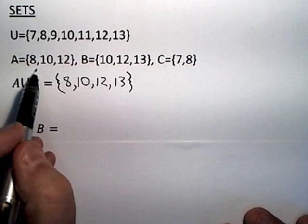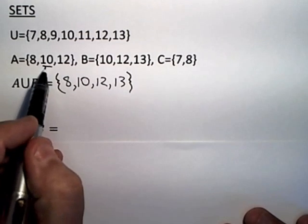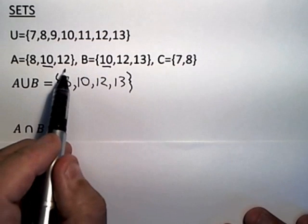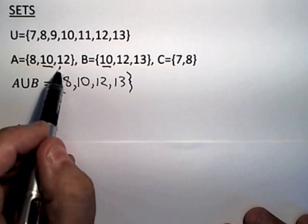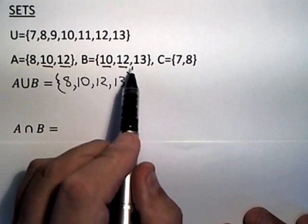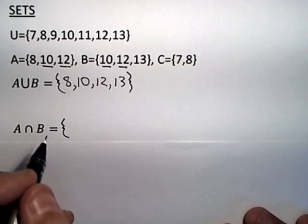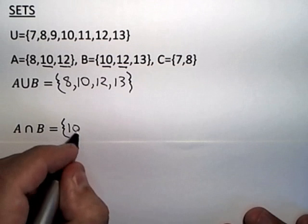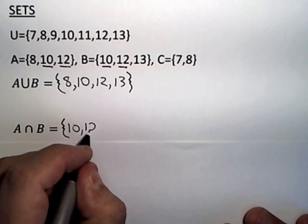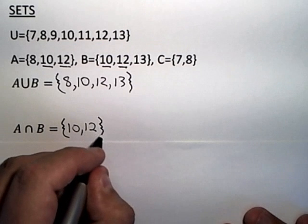So if you look back up here at A and B, 8's in A but not in B, 10's in both, 12's in both, 13 is only in B, not in A. So the intersection of A and B consists of the set with elements 10 and 12.